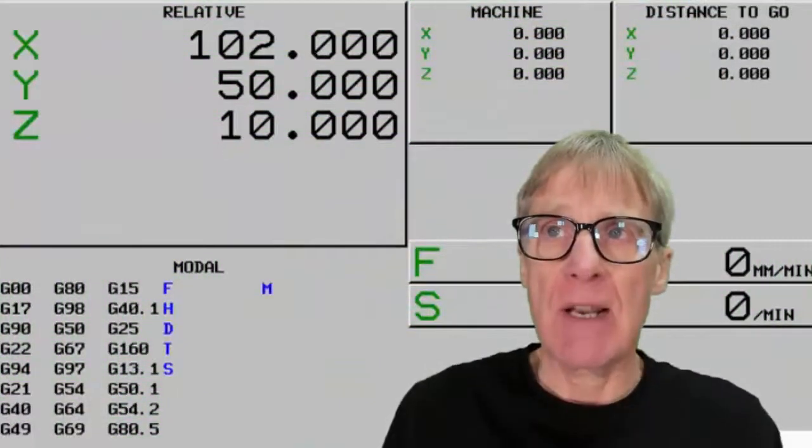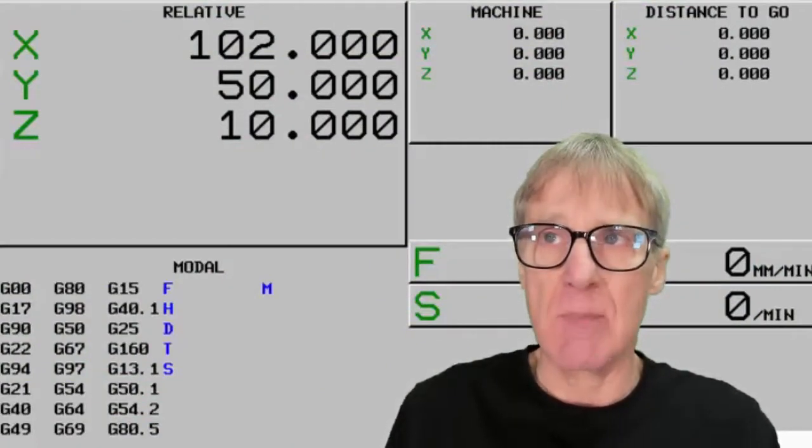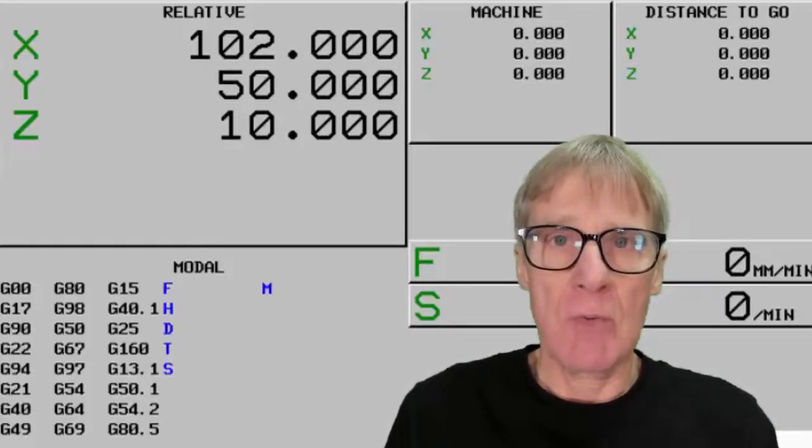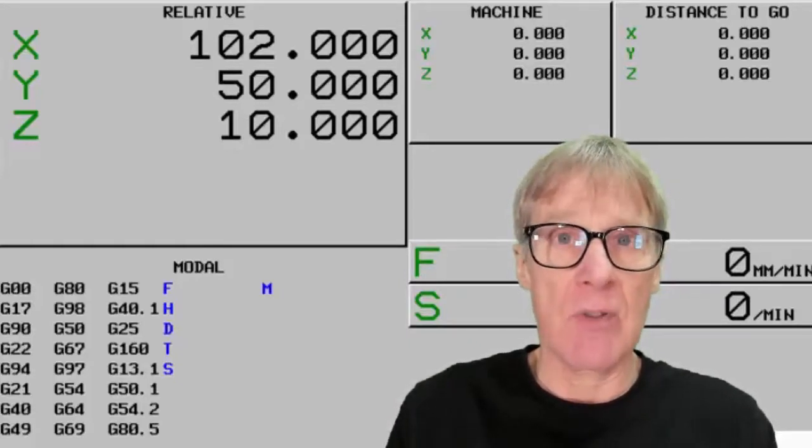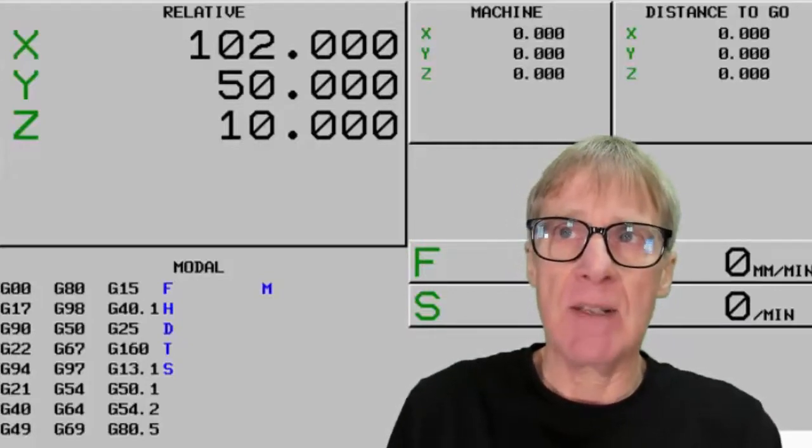The relative display on a Fanuc control is used exclusively by the operator, so that means you can reset this display and do whatever you want. You can preset it, reset it, whatever you want, and it doesn't affect anything else on the machine. The machine doesn't really look at it, so it doesn't tell you anything about what the machine's doing unless you actually use it as some kind of reference point.